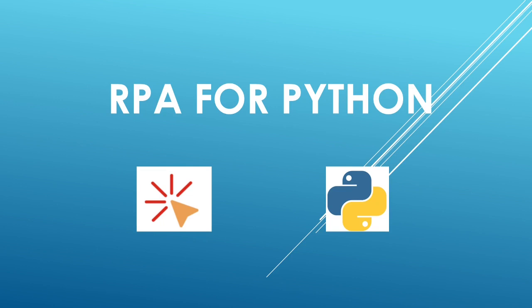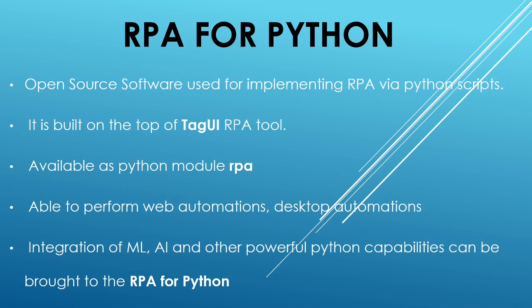Let's have a cool discussion around RPA for Python - what is RPA for Python and what are its features. RPA for Python is an open source software which is used for implementing robotic process automation via Python script. RPA for Python is actually built on top of tagUI, which is another open source RPA tool maintained by AI Singapore. In general, tagUI is combined with Python programming language to build RPA for Python, and it is available as an RPA module.